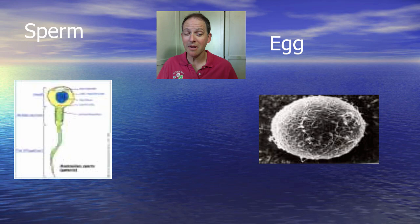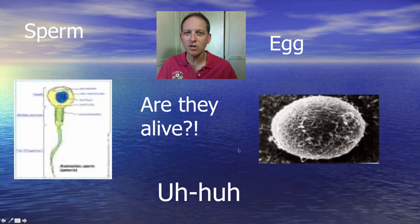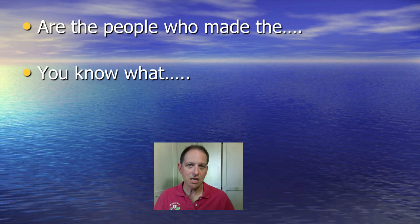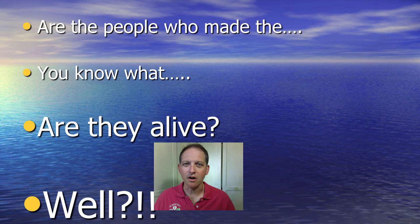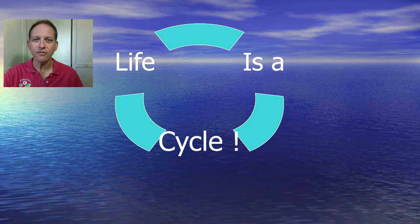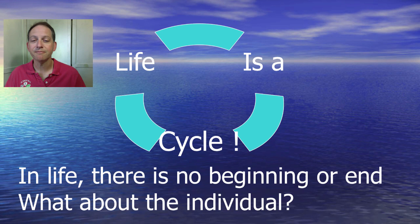Moving back a little farther — are the sperm and egg, the stuff that made that fertilized egg, are they alive? Well, sure they are. That sperm was moving, using up energy, same with that egg. Those things are alive. Are the people who made the sperm and egg alive? Sure, they're all alive. So if everything is alive, where does life begin? Well, the answer is it doesn't begin or end. Life for a species is a cycle — there is no beginning or end, unless of course it goes extinct.